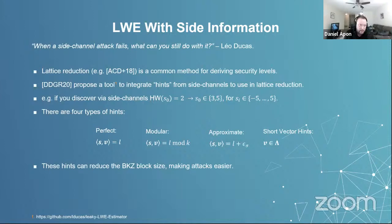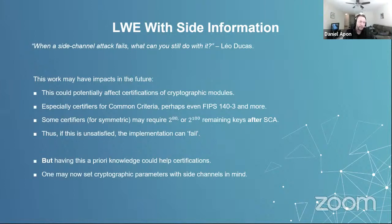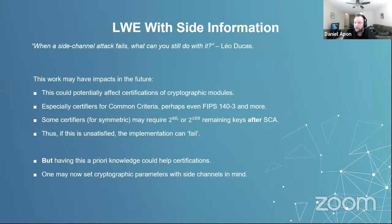In terms of future impacts, this work can affect certifications of cryptographic modules, especially for certification processes such as Common Criteria or FIPS-related material. Some certifiers historically require that some number of remaining key candidates exist — say 2^80 to 2^100 — after a side-channel attack is performed, and if you can't show that's the case for all known side-channel attacks, you can't be certified. This work will provide a framework for a lattice KEM or signature scheme for analyzing that kind of information so you can set your cryptographic parameters with those side channels in mind. A separate issue is the difference between NTT-based multiplication and non-NTT-based multiplication, and in particular the cost of masking such polynomial multiplication operations for lattice KEMs.